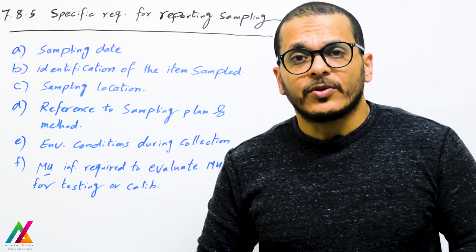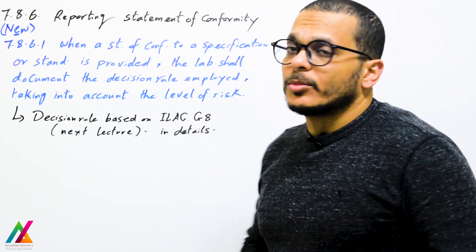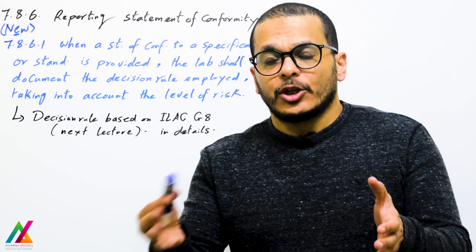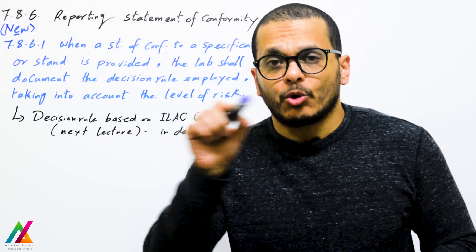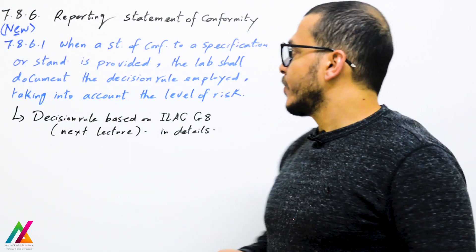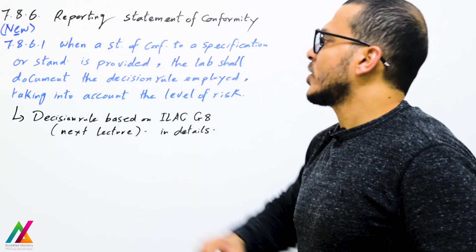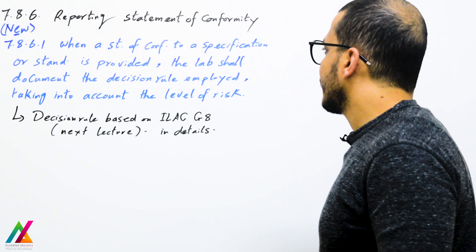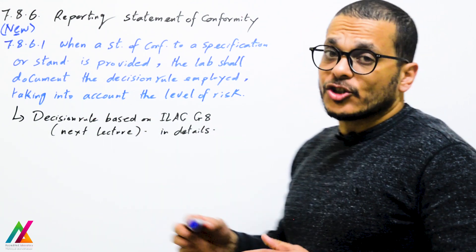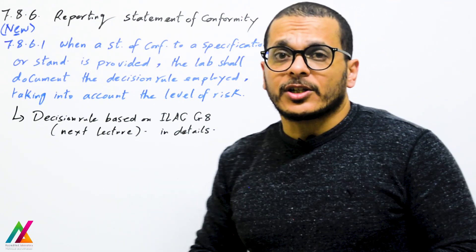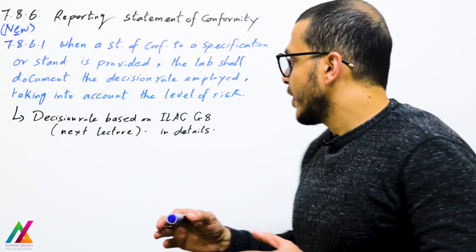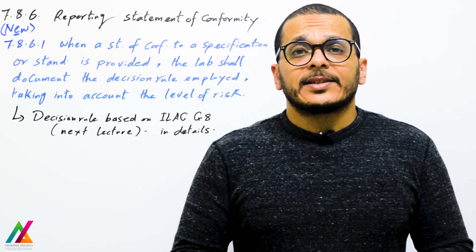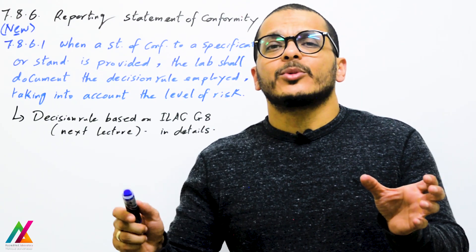A new clause added to this edition is clause 7.8.6 — reporting statement of conformity. This covers whether a sample is accepted or rejected according to a specification or standard. When a statement of conformity to a specification or standard is provided in the report, the lab shall document the decision rule employed, taking into account the level of risk. The next lecture will have a dedicated session on decision rules in detail, based on ILAC G8.